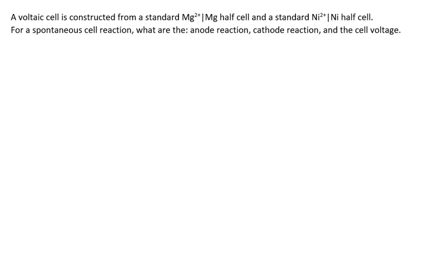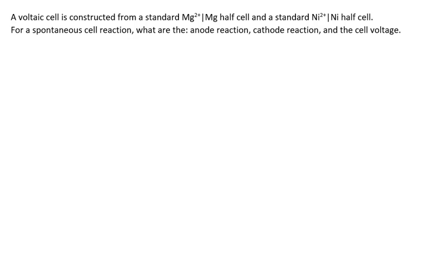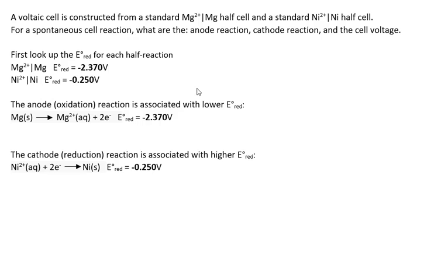For a spontaneous cell reaction, what are the anode, cathode, and cell voltage for a magnesium half-cell combined with a nickel half-cell? The first thing we need to do is look up the reduction half-reactions for both of these half-cells. The magnesium half-reaction has a reduction potential of negative 2.37 volts, and the nickel half-reaction has a reduction potential of negative 0.25 volts.